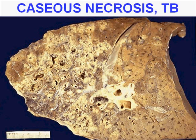Here's caseous necrosis. It's a lung. It has tuberculosis. If you cut through that lung with a regular knife it might have a cheesy consistency and that's why it's called caseous necrosis. However, caseating granulomas are often applied as a microscopic term as well.